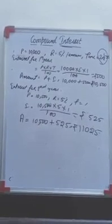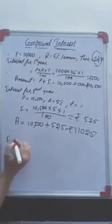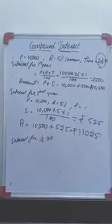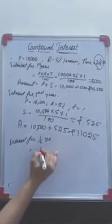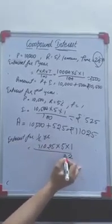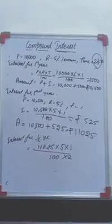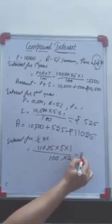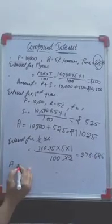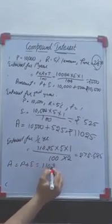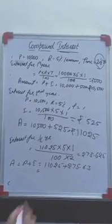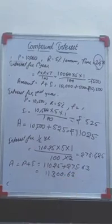2 years are done. Now what is remaining? Half year. I will calculate interest for the half year. It is not a complete 1 year, it is half year. Principal is 11,025, rate is 5, and time is only half year — 1/2. When I solve this, I get 275.625 as interest. Amount is principal plus interest, so 11,025 plus 275.63, giving approximately 11,300.63.